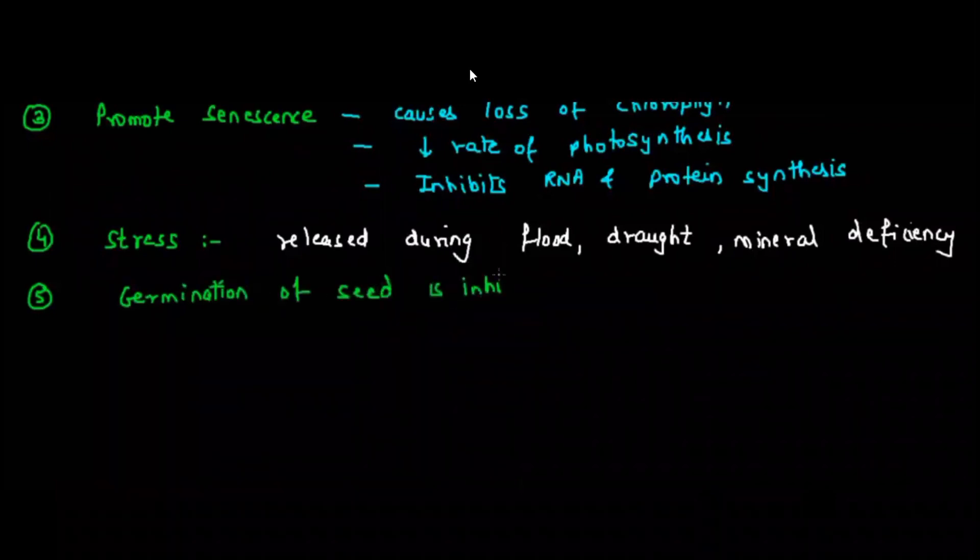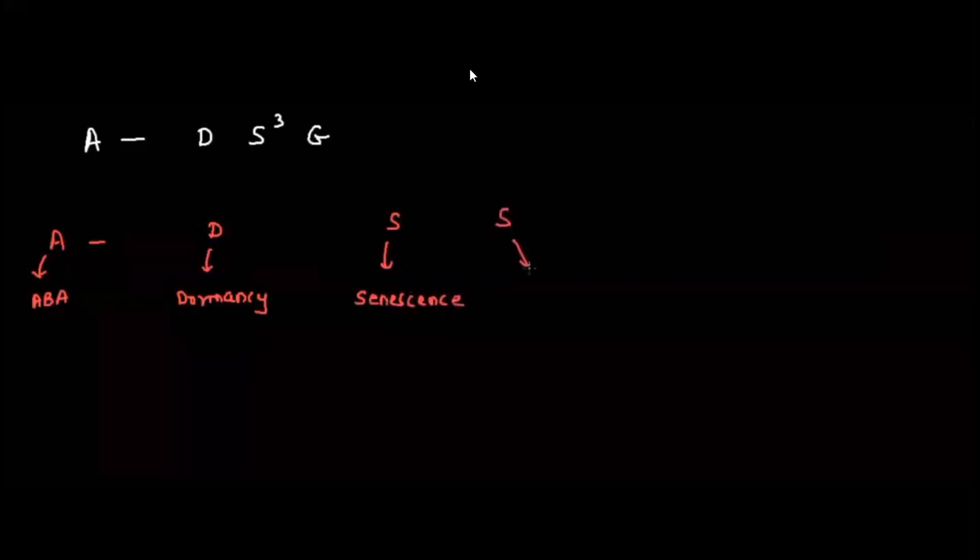Let's understand how we can remember the functions of abscisic acid in one line. The shortcut is ADS³G. A stands for abscisic acid, D stands for dormancy, S³ - the first S stands for senescence, the second S stands for stomata, the third S stands for stress, and G is germination inhibitor. So it increases dormancy, increases senescence, increases stress, decreases germination of seed and results in closure of the stomata.